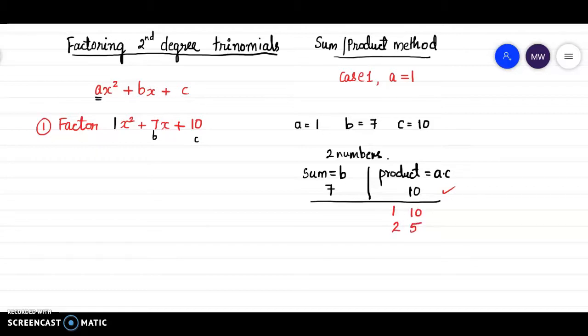You can write 10 as 1 times 10 and 2 times 5. There are only two possibilities to factor 10 here. And you can of course change their signs if needed. But here, you know that the first pair, 1 and 10, when you add them you get 11. When you subtract them you get 9. There is no way that their sums can be 7. So this is not the pair. But the second one, 2 times 5 is 10 and 2 plus 5 is 7. So we know that this is the pair that satisfies our conditions. That their sum is 7 and their product is 10.